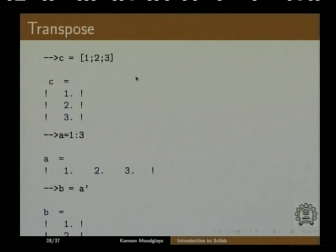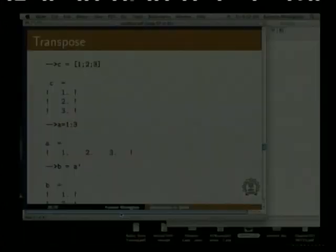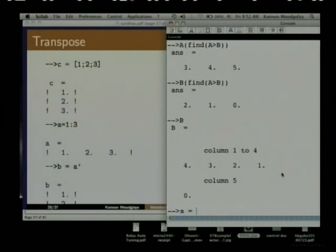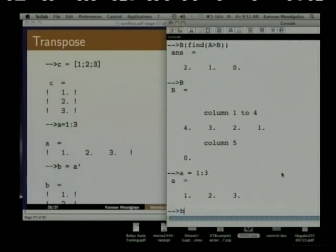It is possible to do transpose. For example, if I have a vector which is a row vector and I want to take the column, I just transpose it — I just say B equals A transpose. This has been cut off in the screen, but you can easily see this: A equals 1 through 3 and then I say B equals A transpose.